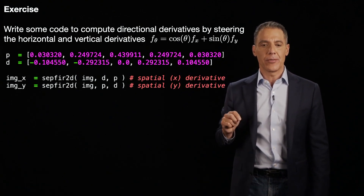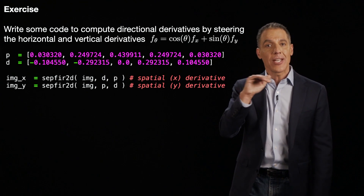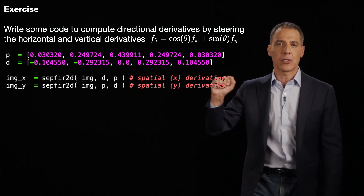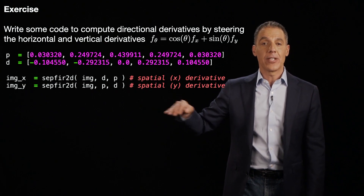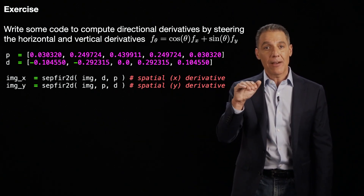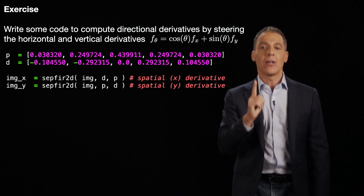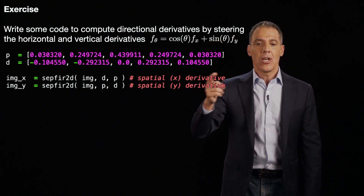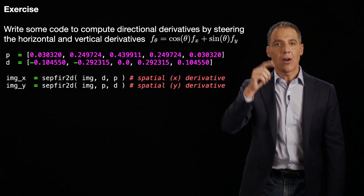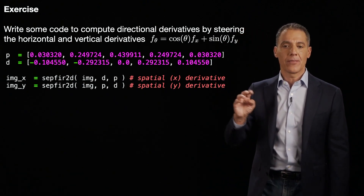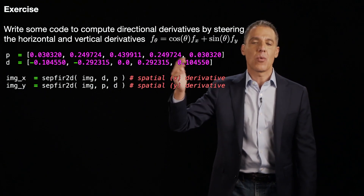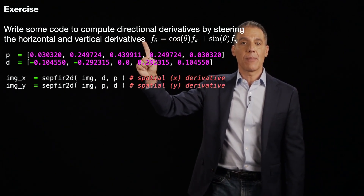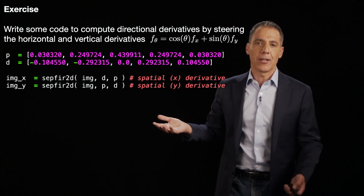Here's how we compute the derivatives: the x derivative is computed by differentiating in x using filter D and convolving with the pre-filter P in the y direction; the y derivative applies P in x and differentiates with D in y. This gives two images — image_x and image_y, the x and y derivatives. Then for every theta, in increments of one or five degrees, compute the directional derivative by taking that linear combination and visualize it.